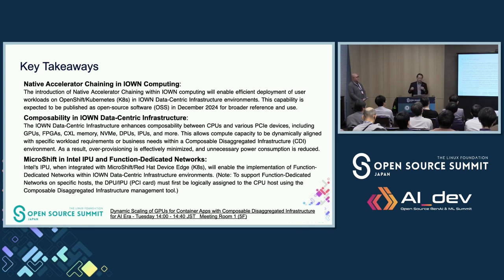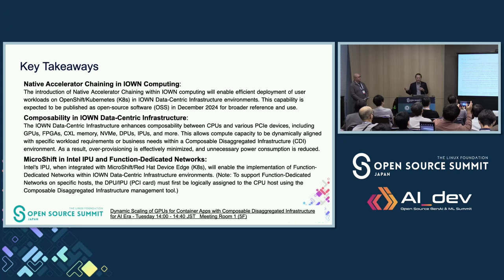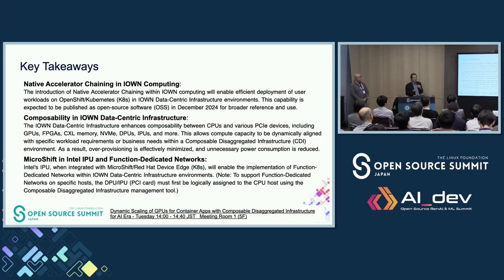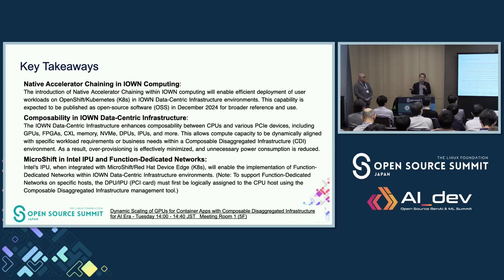Let's quickly go over what we covered today. First, NTT introduced a new concept: native accelerator chaining within IWON computing, and they are planning to release the reference software this December. Then, we talked about the Composite Disaggregated Infrastructure, which allows smooth integration of the CPU host with various PCI devices like GPUs, FPGAs, and IPUs. Disaggregated computing can help cut down power consumption by reducing over-provisioning of resources for individual user workloads. For those interested in GPU composability, there's another session this afternoon covering GPU composability by dynamic resource allocation.